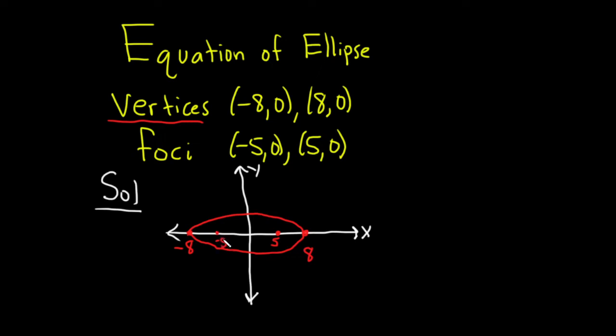The foci always lie on the major axis. So the center of this ellipse, you can see, is right in the middle at (0, 0).